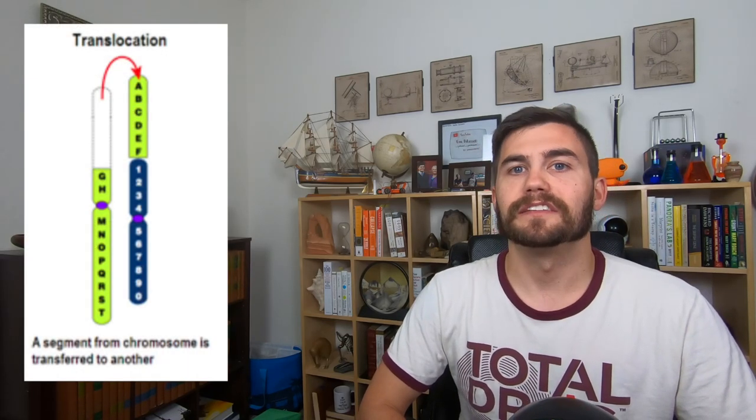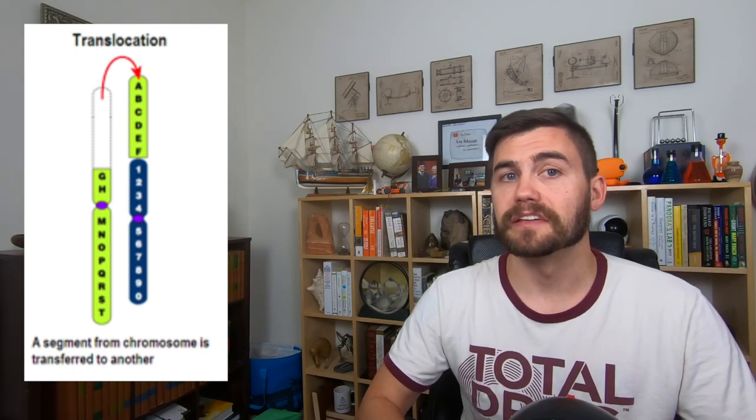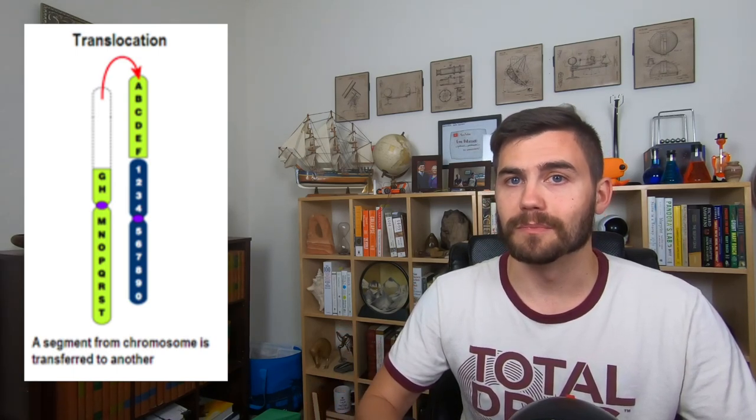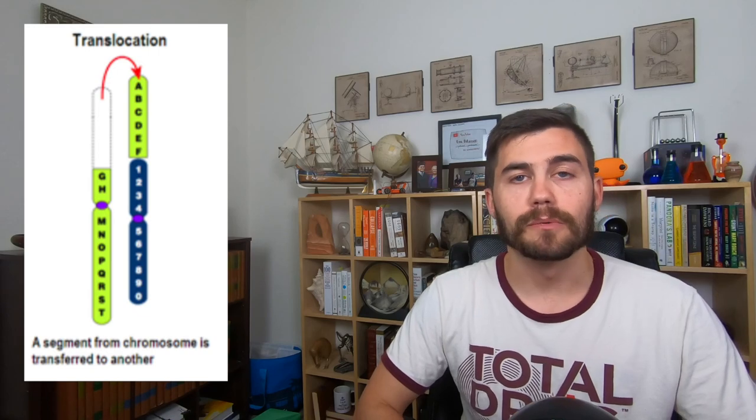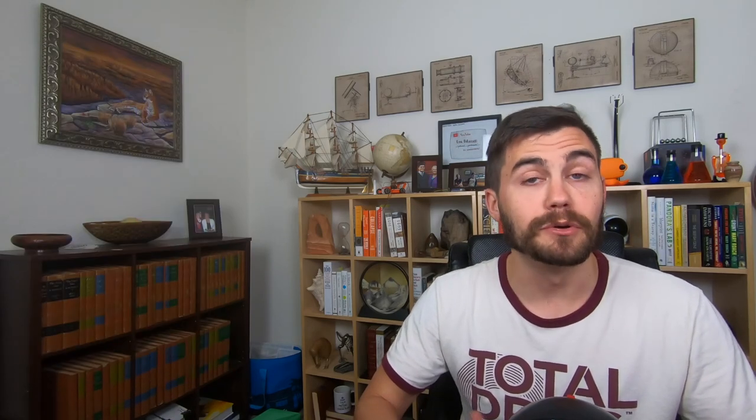A translocation is where a chromosome ends up with genes from a non-homologous chromosome. During crossing over, chromosomes 4, remember you have two of each chromosome, exchange genetic material, and there's no problem. But chromosome 4 is not supposed to exchange genes with chromosome 8, for example. It's possible that a translocation is harmless.